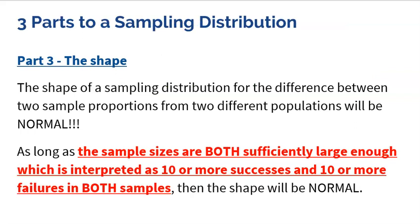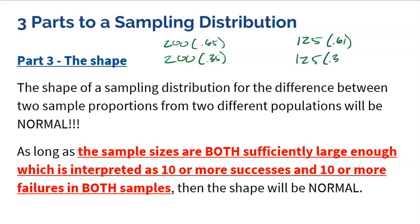The third element needed for our sampling distribution is shape. The shape will be normal, provided both samples are sufficiently large — meaning both samples have 10 or more successes and 10 or more failures. You need to actually show the work for this check. For girls: 200 × 0.65 and 200 × 0.35; for boys: 125 × 0.61 and 125 × 0.39. Even if it's obvious the numbers exceed 10, you still need to verify and show that calculation.